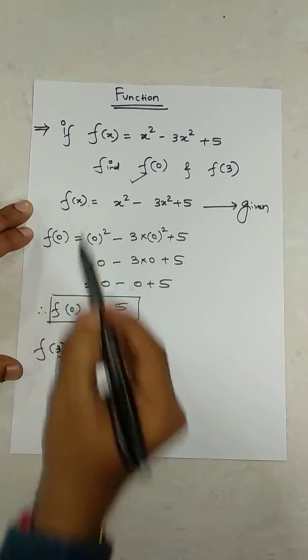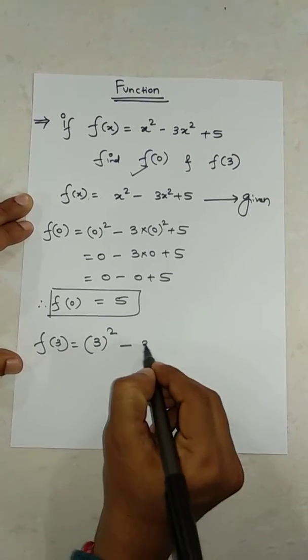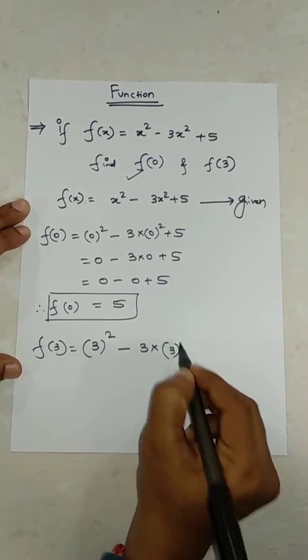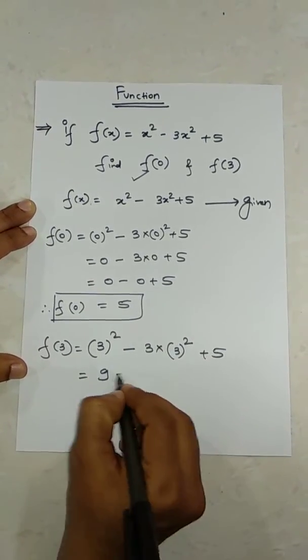So, 3² minus 3 into 3² plus 5. 3 squared is 9, minus 3 into 9 plus 5.